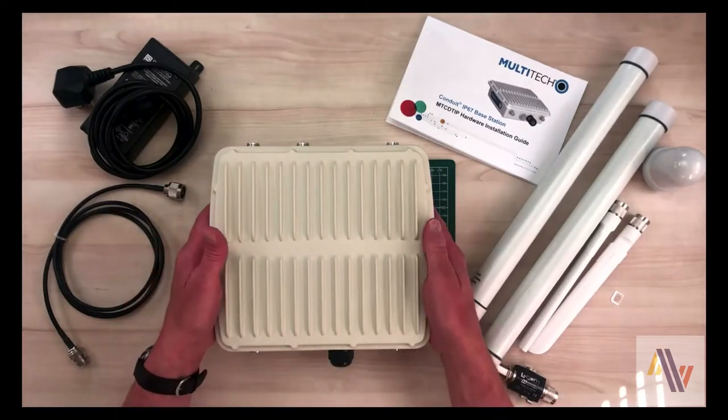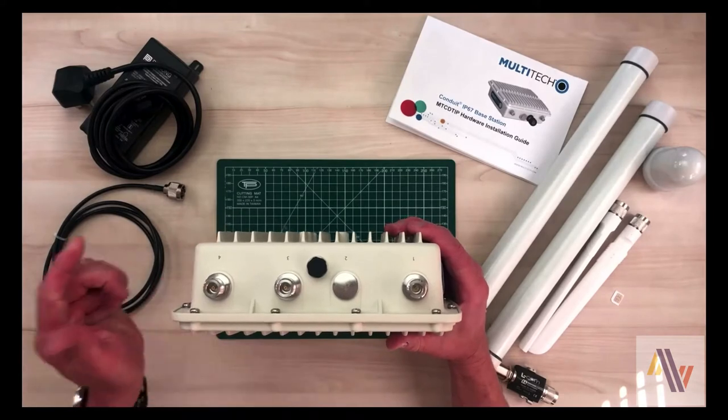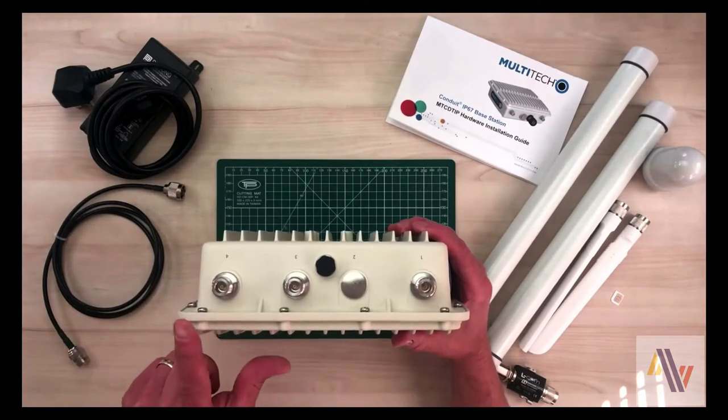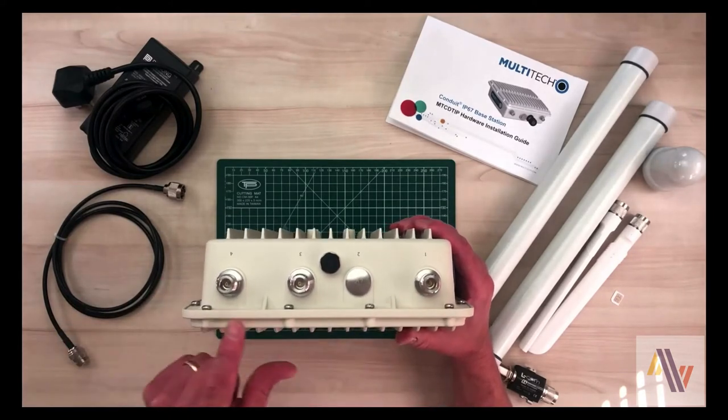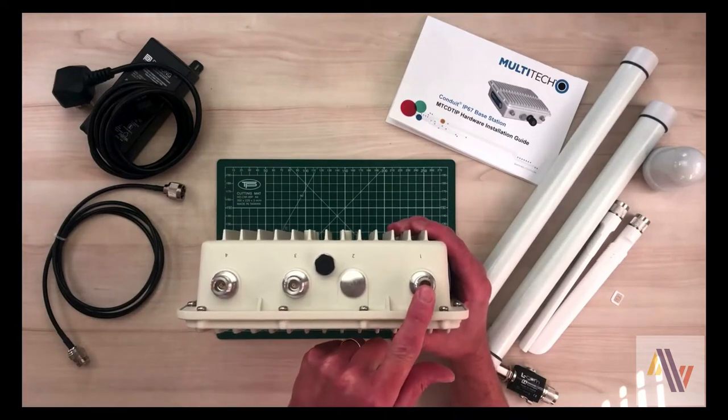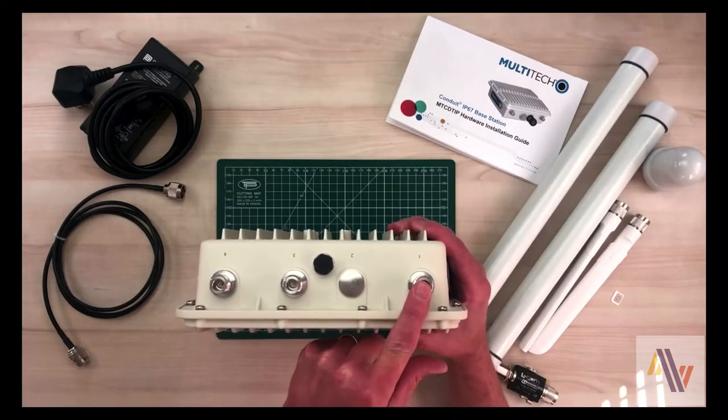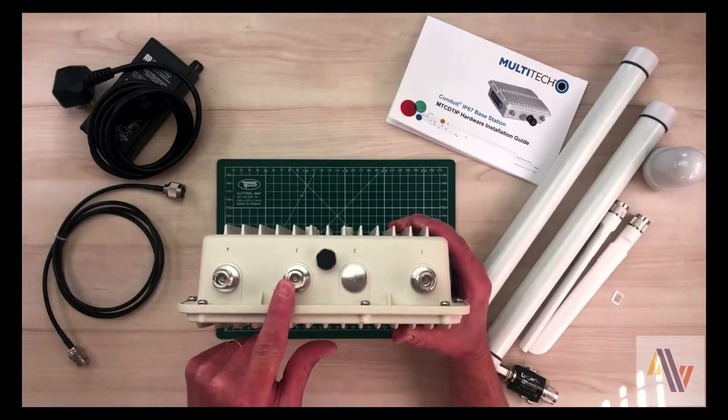Looking at the main unit in more detail, along the top edge we have antennas for the LoRaWAN radios. This is radio 2 and this is radio 1. And here in the middle we have the GPS antenna connection.